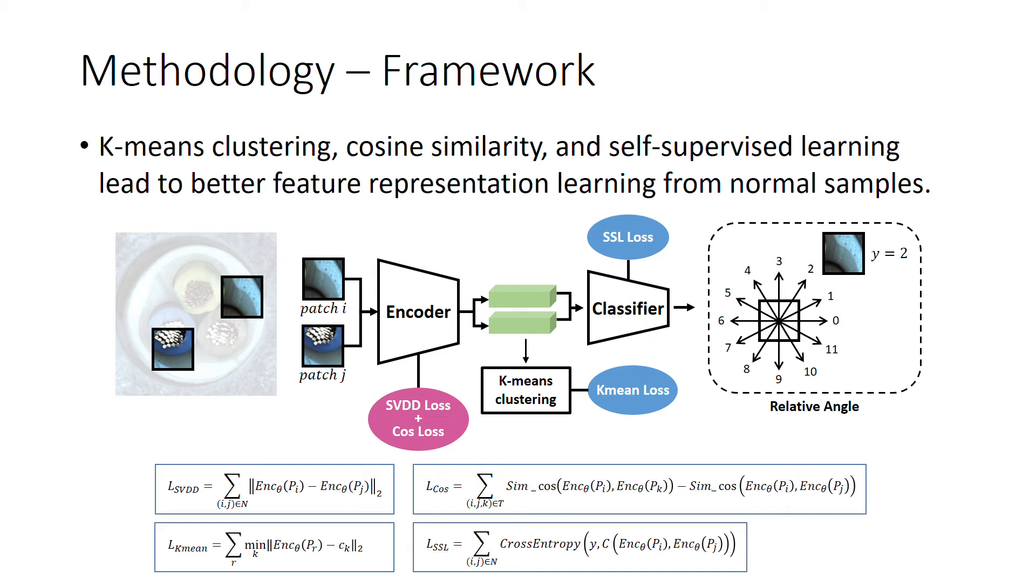The feature embeddings would then be clustered by applying k-means clustering method, which trained by k-mean loss to gather patches with similar patterns. Meanwhile, the features will be sent into a classifier to predict the relative angles between the patches. And self-supervised learning loss is trained to help predict accurate direction between two neighboring patches.